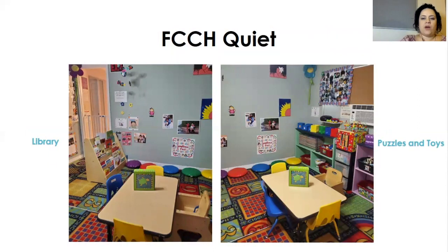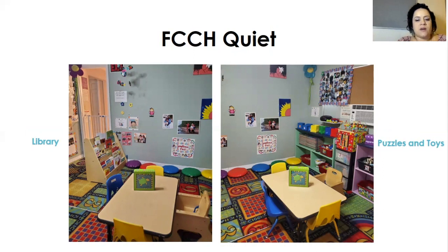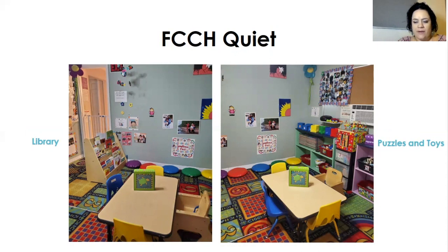Here's an example of a quiet space in our family child care home. As you can see, the teacher has combined the circle time area, the library area, and the table toy area. Large and small spaces can be manipulated to serve your purpose. If you don't have enough space, be creative. Remember combining liked concepts — concepts that can cross over. Your quiet areas can be close together, and your loud areas can be close together if not combined completely.